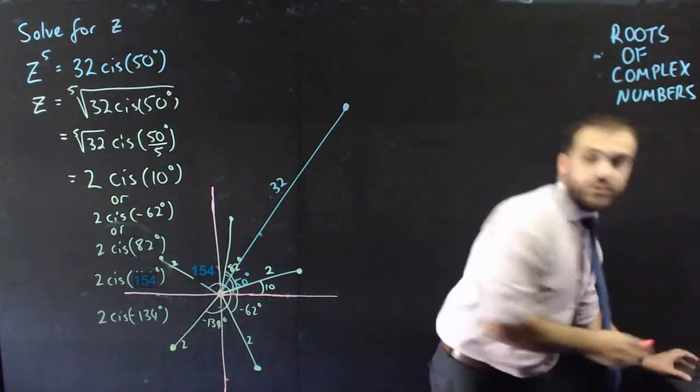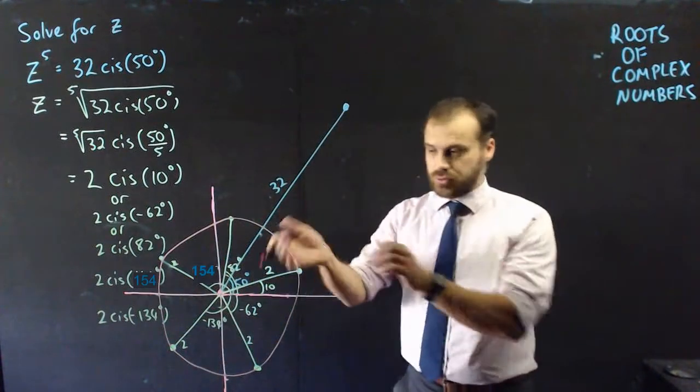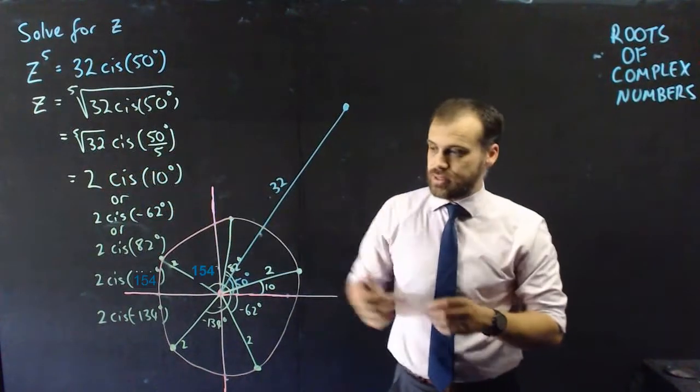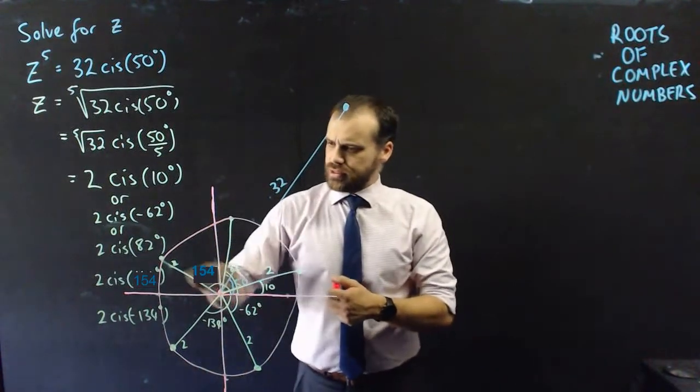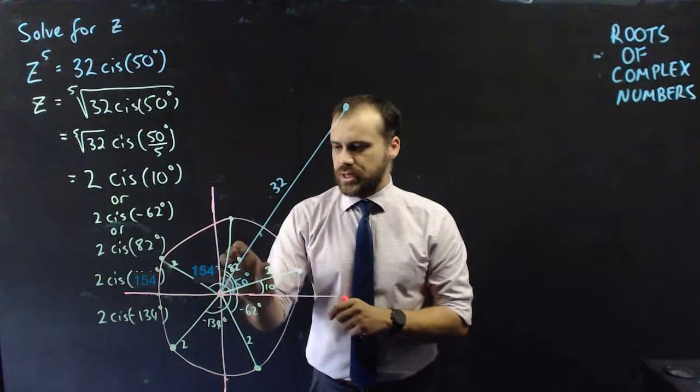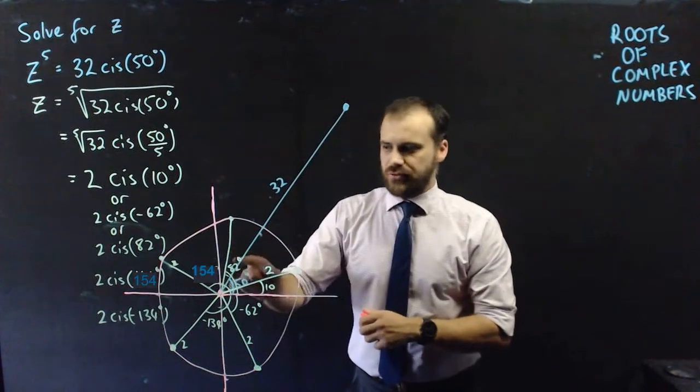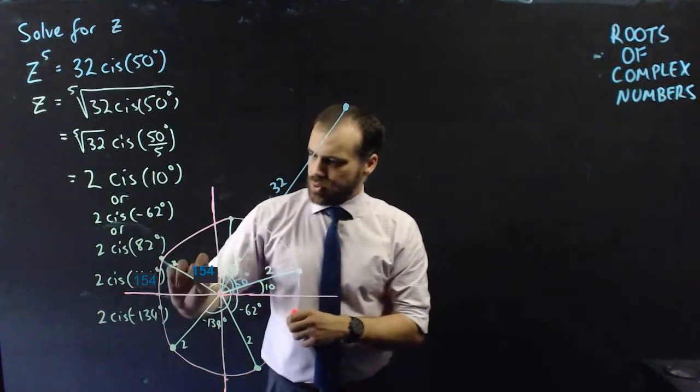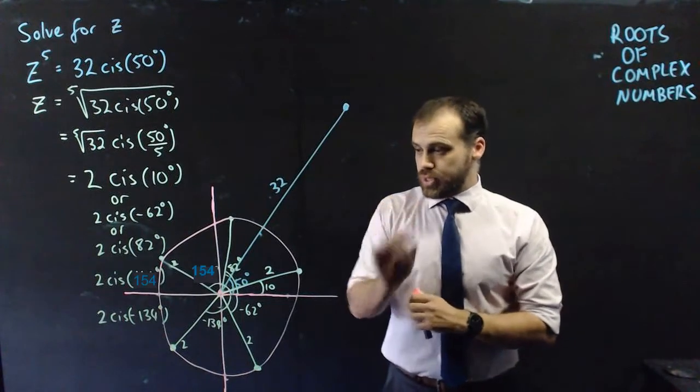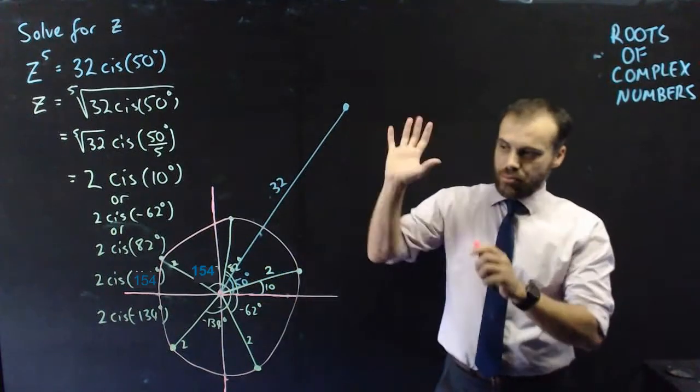You should be noticing something beautiful about this. What we get is a circle, radius 2. The radius of that circle where all of our solutions lie is the square root, which makes sense. Now look at all of these lines here. First one's 10 degrees, next one's 82 degrees. There are 72 degrees difference between 10 and 82. The next one's 82 and 144, there are 72 degrees difference. Between this one and this one, 72 degrees. Between this one and this one, 72 degrees. Between this one and this one, 72 degrees. So what we get is 5 equally placed answers around this circle.